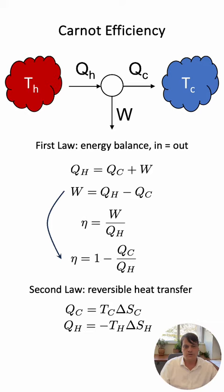And Q hot is minus T hot times the change in entropy of the hot reservoir. And that is because as we have defined Q C and Q hot they are both positive quantities but the entropy of the hot reservoir decreases and the entropy of the cold reservoir increases.